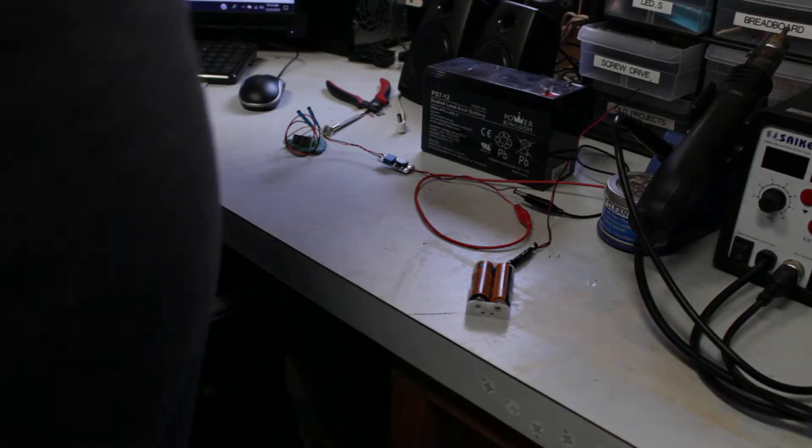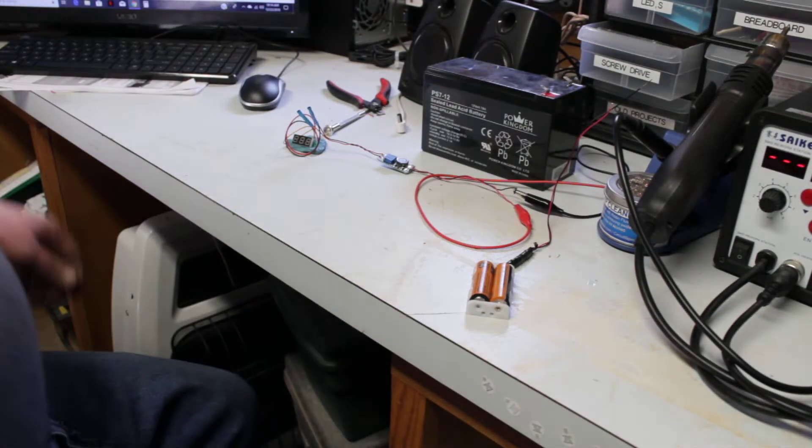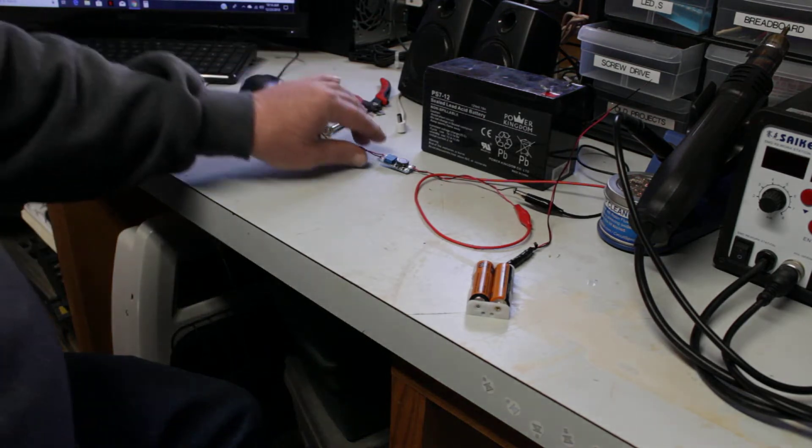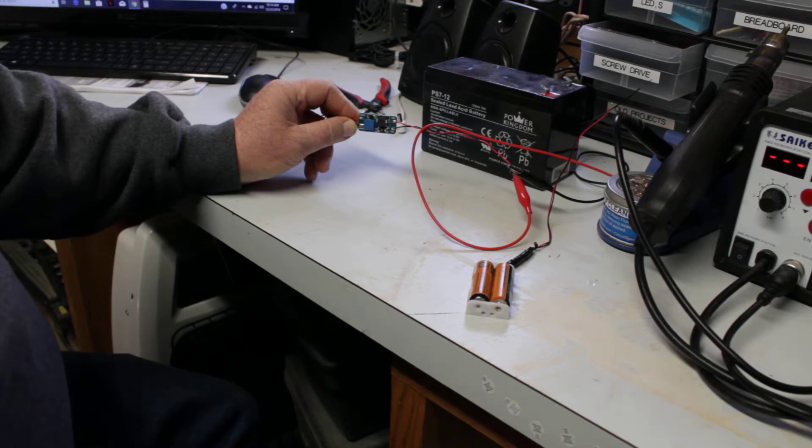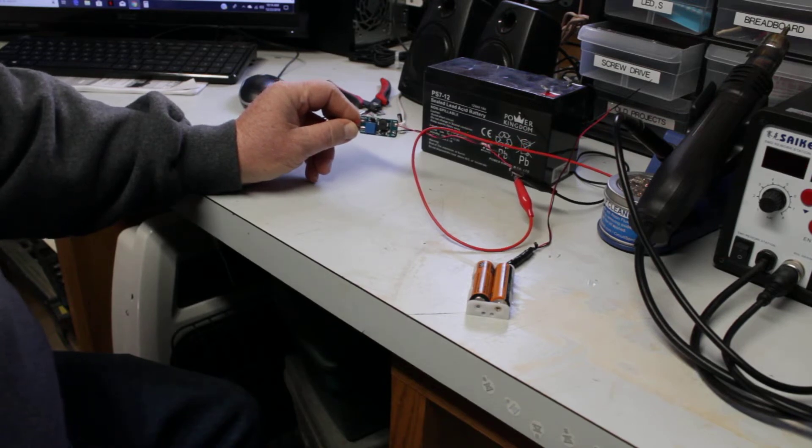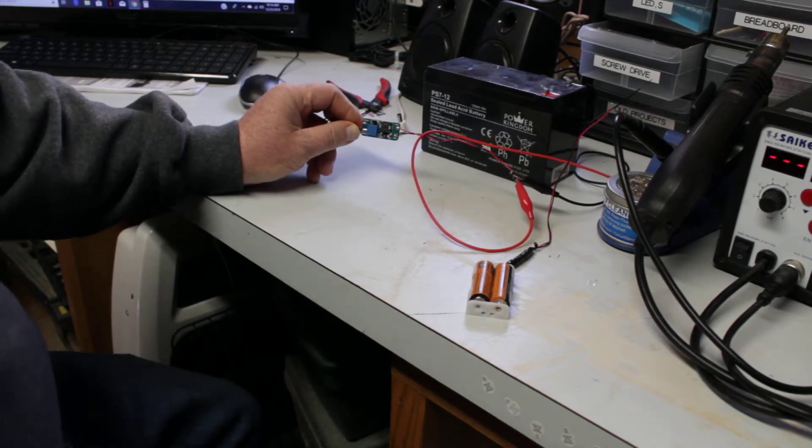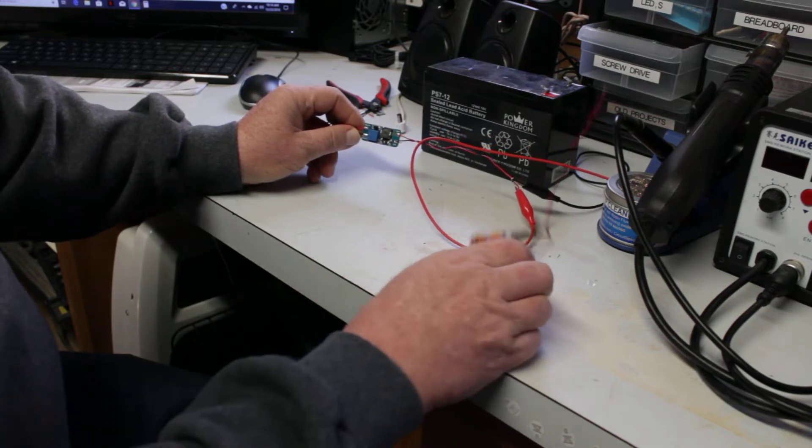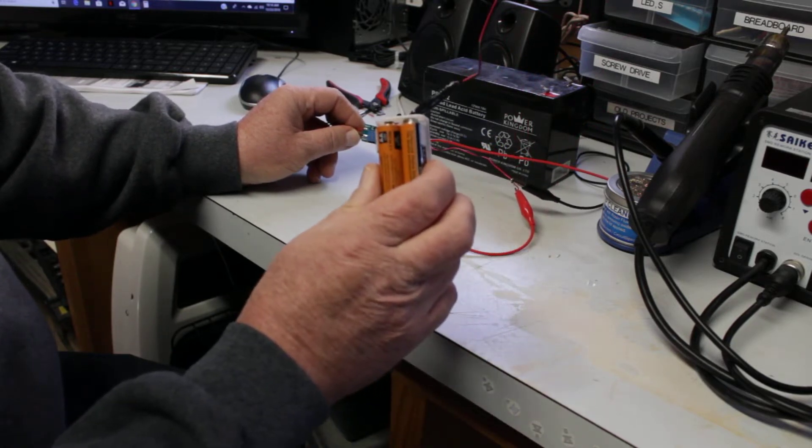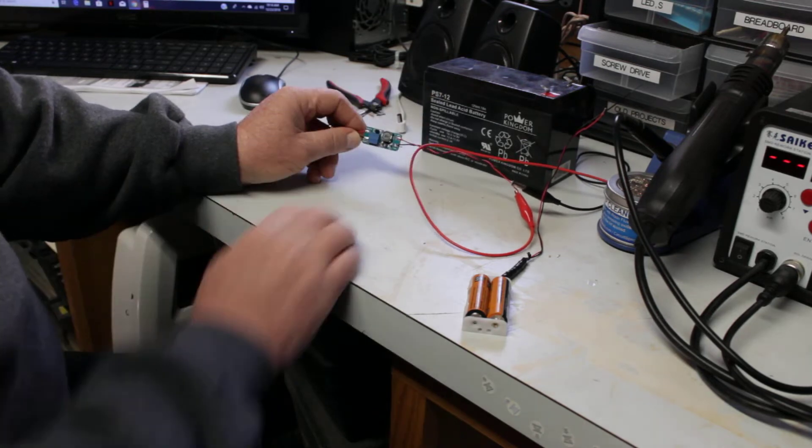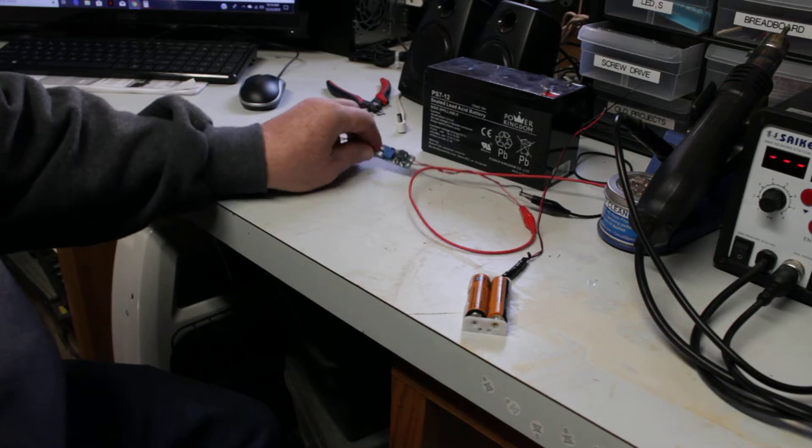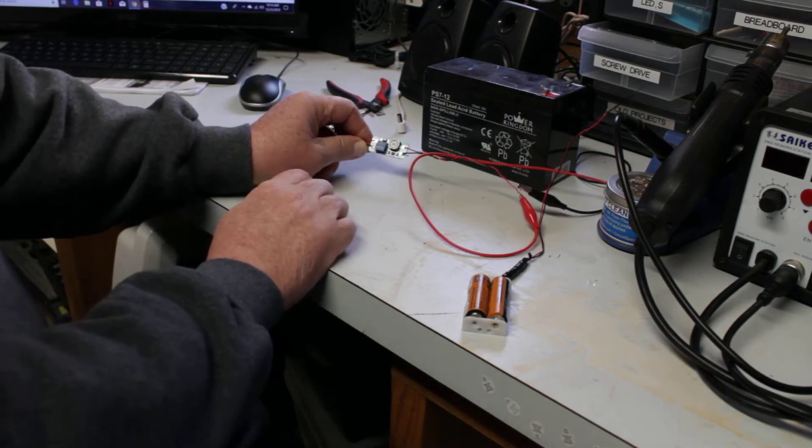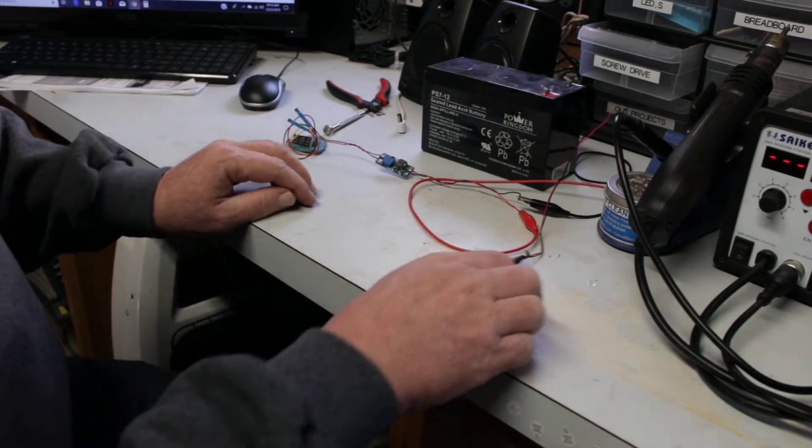Hey guys, today I've got the MT 3608 DC to DC step-up booster. It'll take two double A's like this and boost it up to 12 volts. There's a certain way you have to do this or you'll just smoke this thing right out of the box.